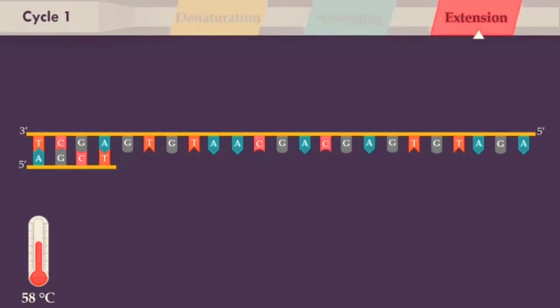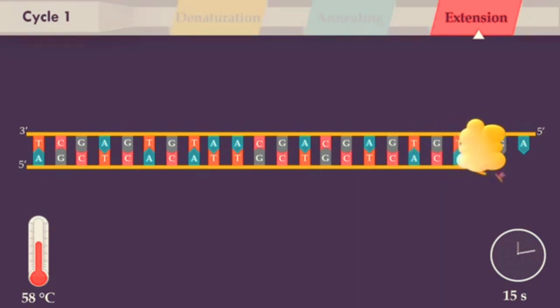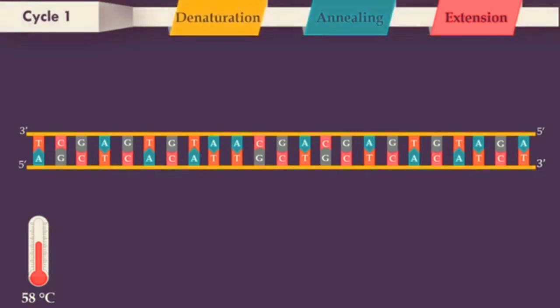In the extension step, the DNA polymerase synthesizes a new DNA strand complementary to the DNA template strand by adding free nucleotides from the reaction mixture that are complementary to the template in the 5' to 3' direction. The temperature at this step depends on the DNA polymerase used. After the first cycle, the double-stranded DNA target is obtained.